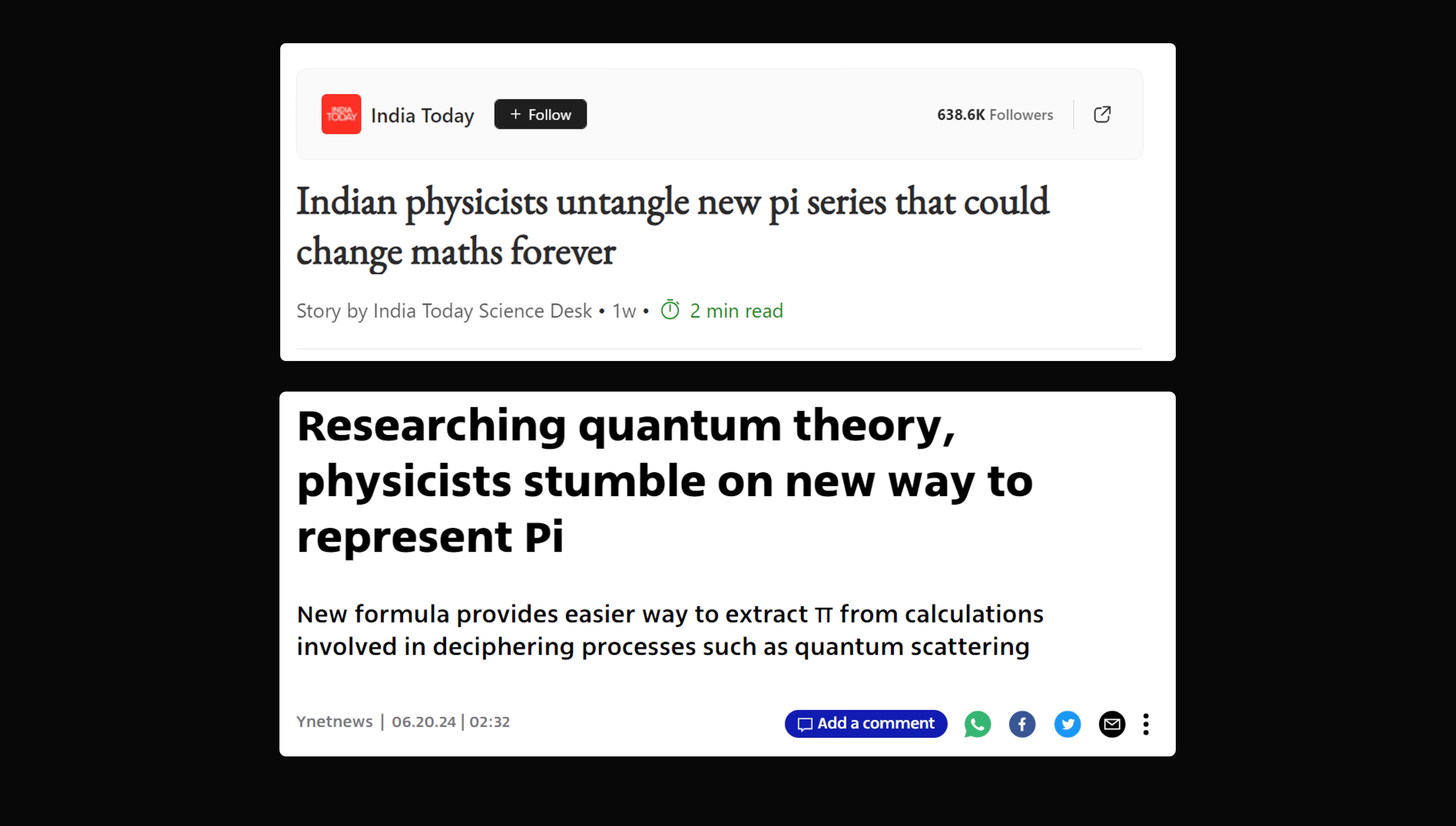Researching quantum theory, physicists stumble on a new way to represent pi. New formula provides easier way to extract pi from calculations involved in deciphering processes such as quantum scattering. Wow, so what does this all mean?